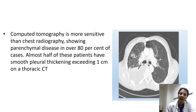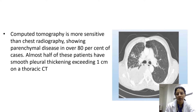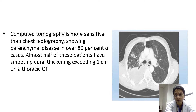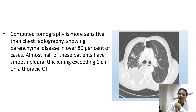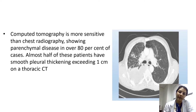CT scan is much more sensitive than chest radiograph, showing parenchymal disease in over 80% of cases. Almost half of patients have smooth pleural thickening exceeding 1 cm on thoracic CT. The advantage of CT is a three-dimensional picture, allowing detection of fluid in the costo-vertebral gutter and posterior pleural space, and visualization of infiltrates or nodular shadows indicating pulmonary parenchymal involvement.